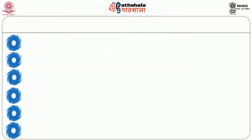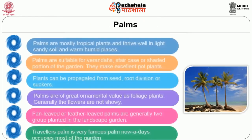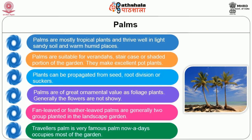We will see about palms. Palms are mostly tropical plants and thrive well in light sandy soil and warm humid places. They are suitable for verandas, staircases or shaded portions of the garden. They may be excellent pot plants. Plants can be propagated from seed, root division or suckers. Palms have great ornamental value as foliage plants. Generally the flowers are not showy. Fan-leaved or feather-leaved palms are generally the two groups planted in the landscape garden. Traveller's palm is a very famous palm that now occupies most gardens.